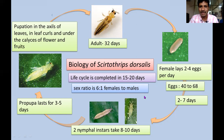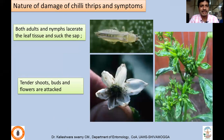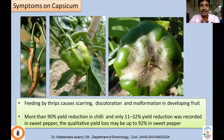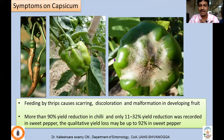An important point: larvae acquire the virus and adults transmit it. It is transmitted in a persistent manner. There is a non-feeding prepupal stage lasting 3 to 5 days; pupation generally occurs in leaves, leaf curls, and under calyx of flowers and fruits. The total egg-to-adult period is about 15 to 20 days. Populations contain more females than males, leading to rapid population buildup.